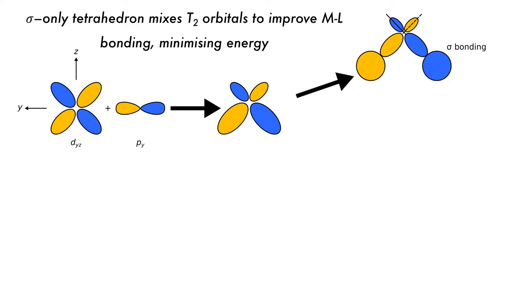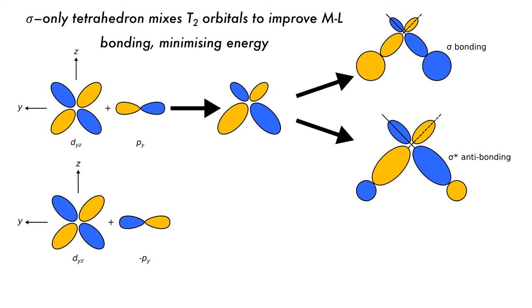Looking at sigma bonding, if one of the T2 sulks is considered, there is good sigma overlap giving maximum bond strength. Flipping the phase of the T2 sulk would result in an unfavorable interaction and is sigma anti-bonding. This is only one combination of the DYZ and PY orbitals.